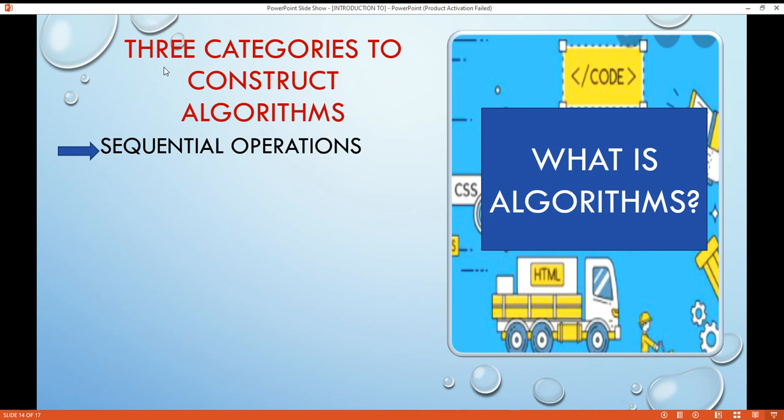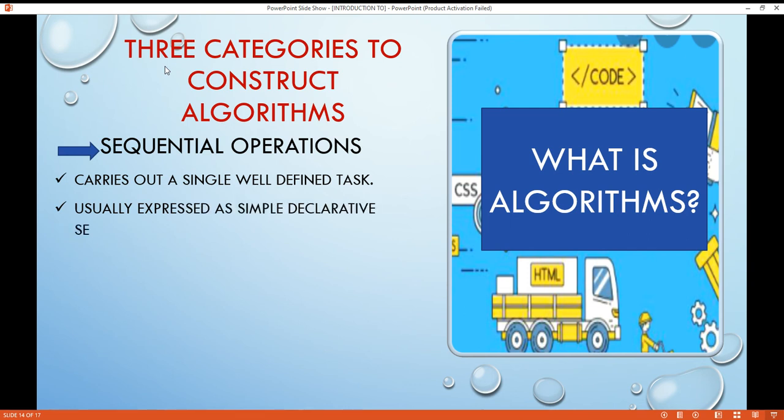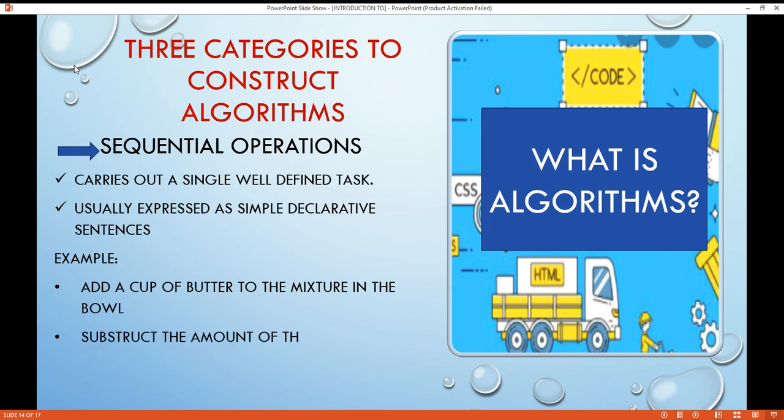For sequential operations, this is a sequential instruction that carries out a single well-defined task. When that task is finished, the algorithm moves on to the next operation. Sequential operations are usually expressed as simple declarative sentences. For example: add one cup of butter to the mixture in a bowl. Subtract the amount of the check from the current account balance. Set the value of X to 1.